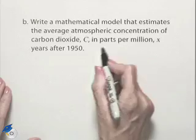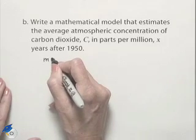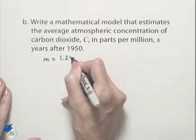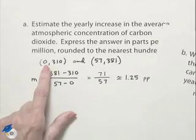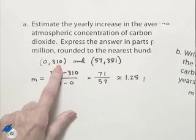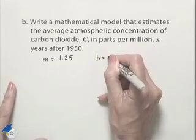So we've just determined that using this setup, x years after 1950, we have a slope which is equal to 1.25. And because of the way we set this up, our y intercept is going to be 0, 310, which means my b value equals 310.